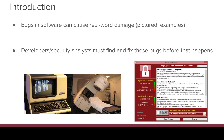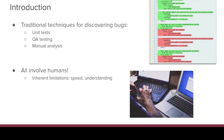In both cases, there was an underlying flaw in software that caused real-world harm. So it's the job of software developers and security analysts to find those flaws and fix them before they can actually cause harm. We have a few traditional techniques for doing that, such as unit tests, where you write code that tests your code and checks that it meets certain conditions.